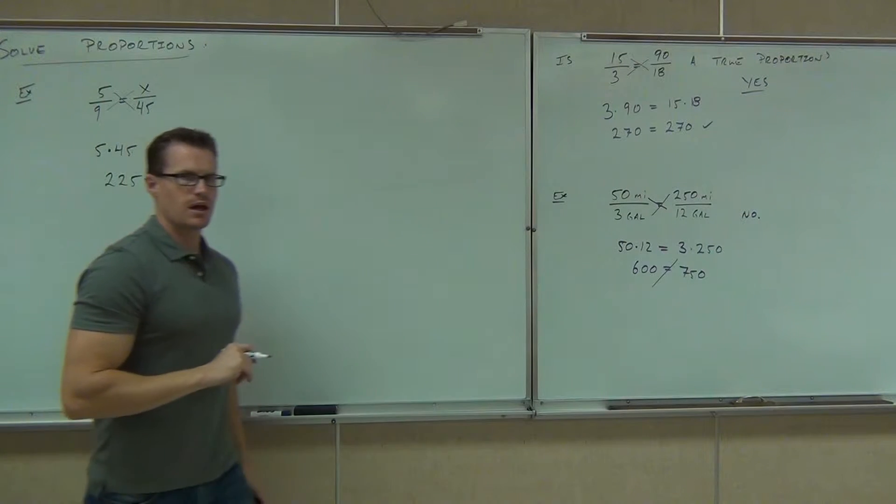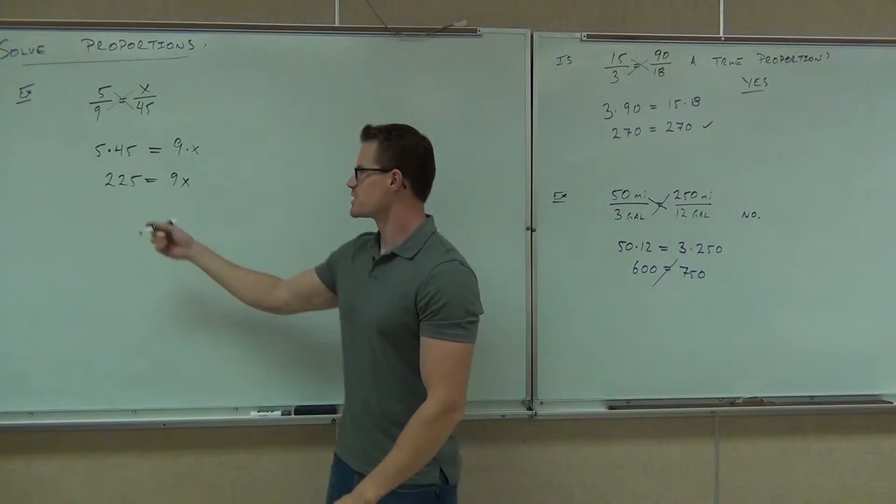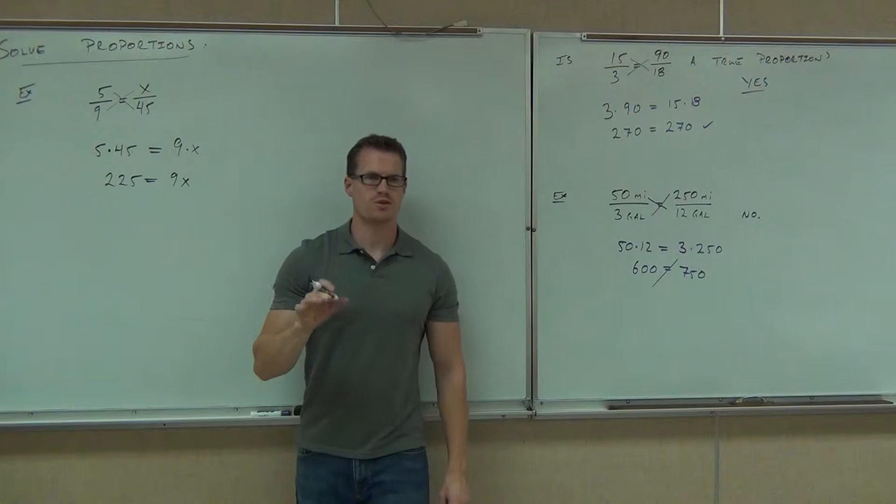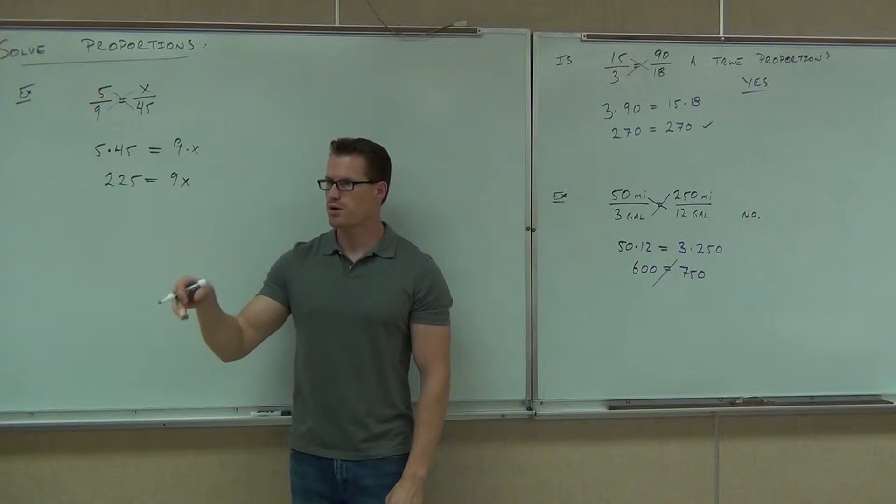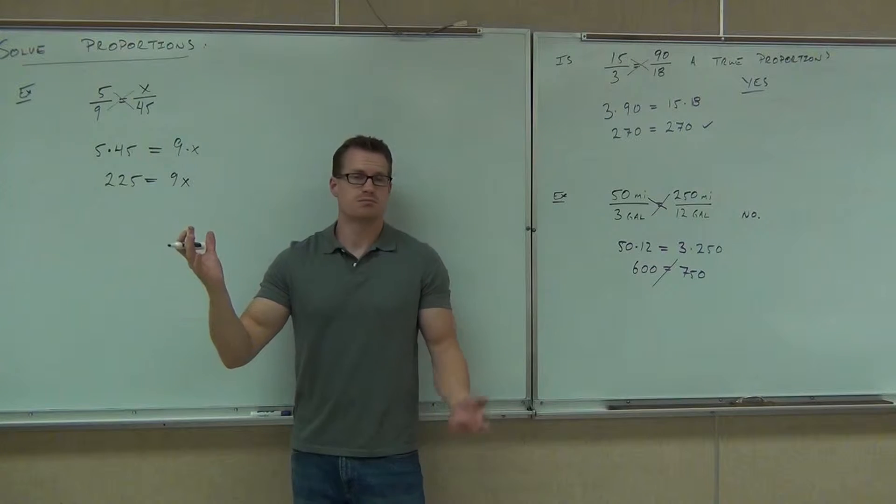It would be 25. Equals 9x and, oh, wait. Hey, have you seen problems like that before? This is kind of cool about proportions. Proportions are two-step problems. You multiply across and then you divide. That's it. That's all you've got to do.